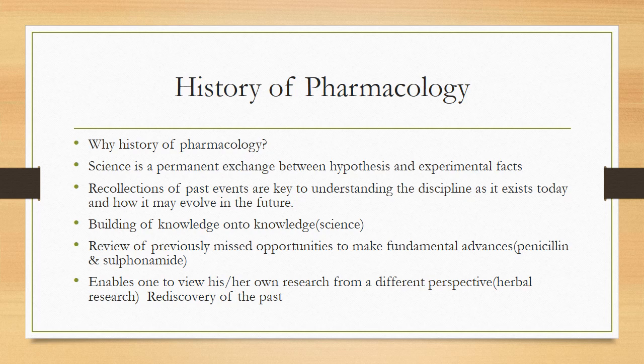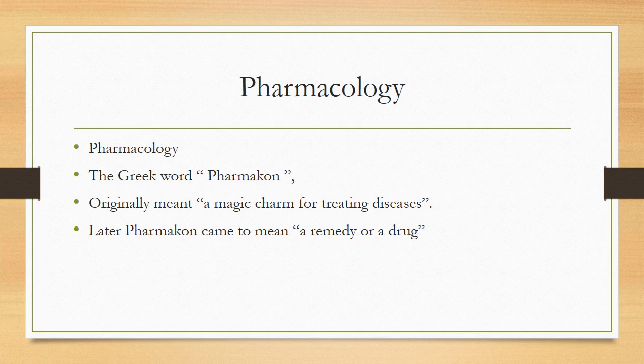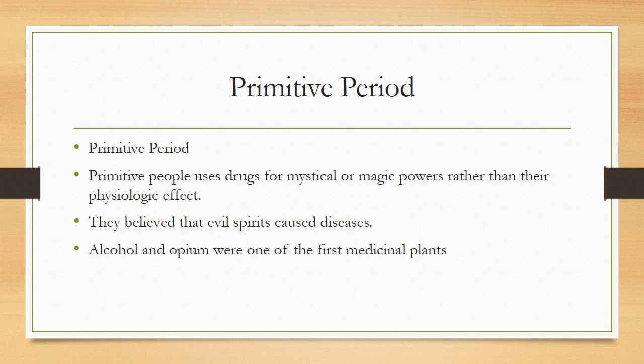Science is a permanent exchange between hypothesis and experimental facts. The word pharmacology is a Greek word — pharmakon — which originally meant a magic charm for treating disease. Later, pharmakon came to mean a remedy or a drug. Primitive people used drugs for magical purposes rather than their physiological effect, because they believed evil spirits caused disease. Alcohol and opium were among the first medicinal plants.